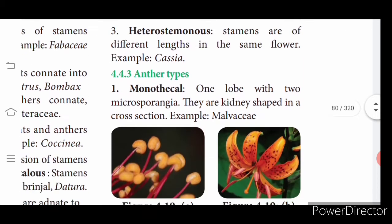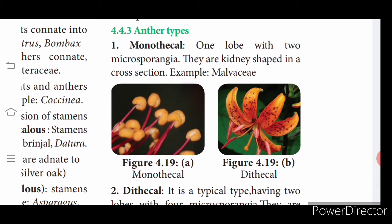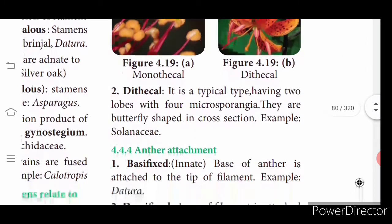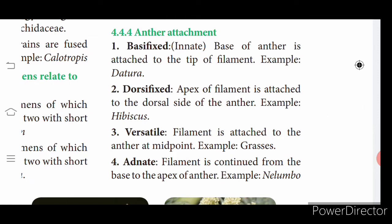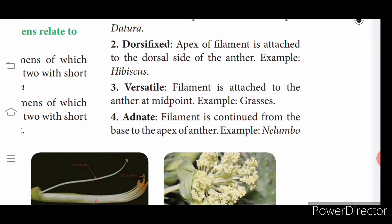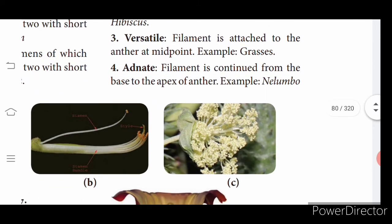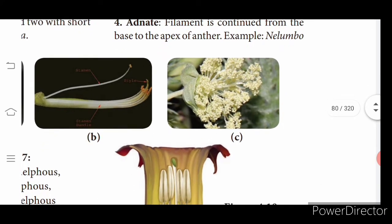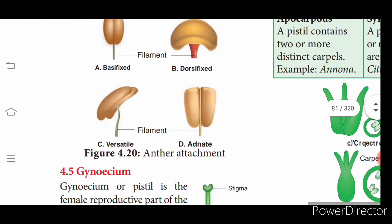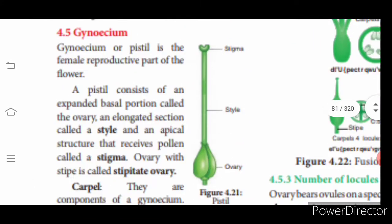Adenation types: episepalous — stamens adnate to sepals; epipetalous — stamens adnate to tepals and petals; gynostegium — conation product of stamens and stigma. Pollinium: pollen grains fused into a single mass. Arrangement by length: didynamous — four stamens, two long and two short; tetradynamous — six stamens, four long and two short; heterostemonous — stamens of different lengths. Monothecal: one lobe with two microsporangia, kidney-shaped. Dithecal: typical type with two lobes and four microsporangia.